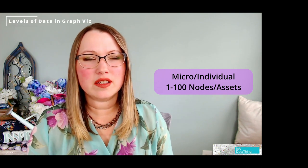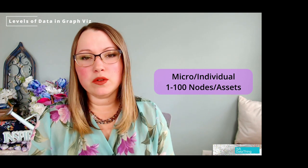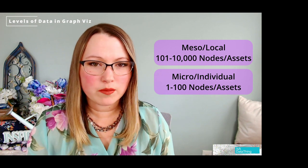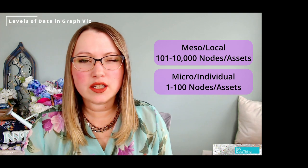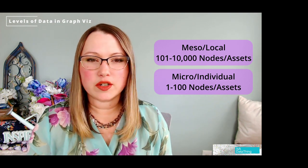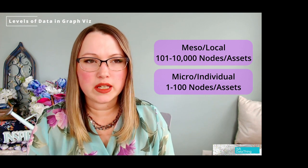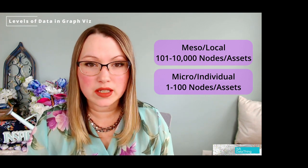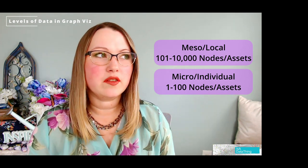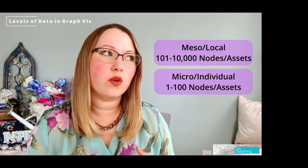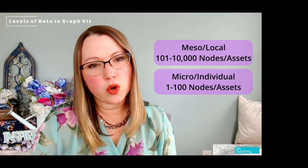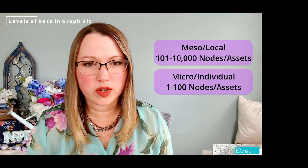There's a middle tier called the local level, which is the middle ground between the micro and the macro. This can usually go up to about 10,000 records — that's the rule of thumb for what a local entity would be. This could potentially be a county or a state, or specific companies, universities, or even departments.